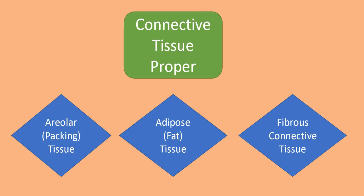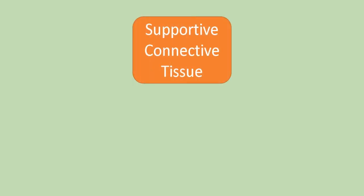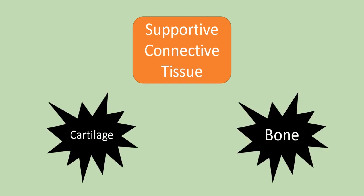Supportive connective tissue includes cartilage and bone, which provide a supportive framework for the body. Cartilage is elastic and mainly made up of non-living cells called chondroblasts. Bone is a hard, porous tissue where living cells known as osteocytes or osteoblasts are present. Both cartilage and bone are placed under supportive connective tissue.